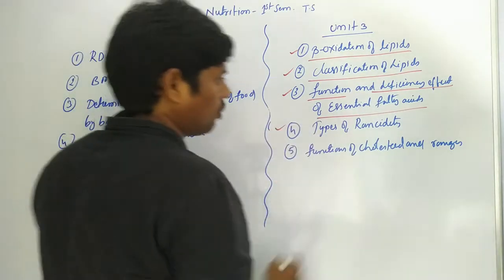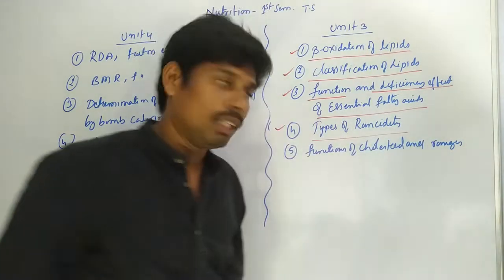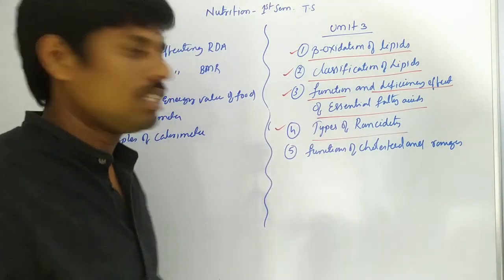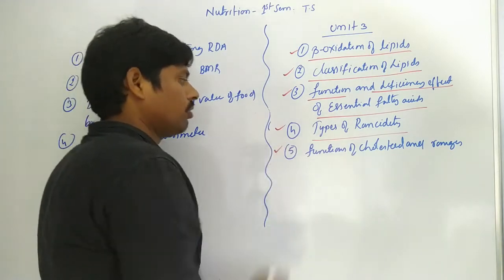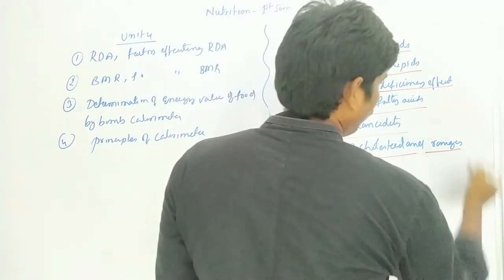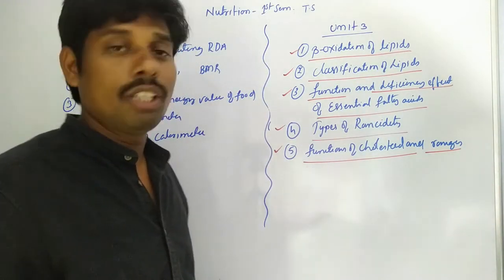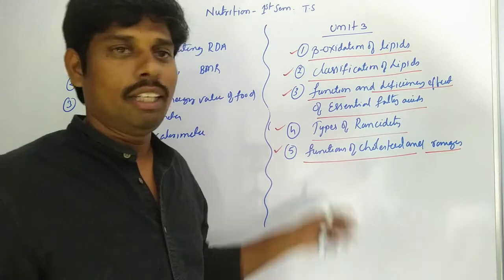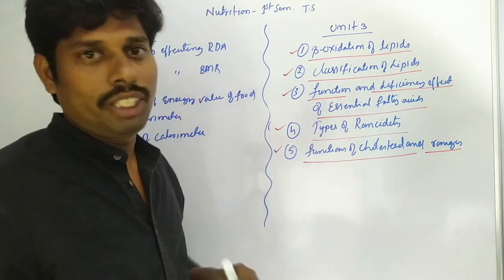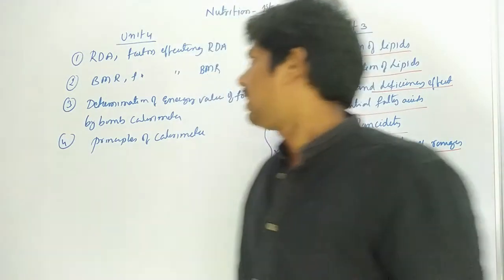The fourth question is the types of acidity — types of acidity is the fourth important question. The fifth important question is the functions of cholesterol and what are the ranges. Functions of cholesterol and its ranges — that is the fifth important question in unit 3.